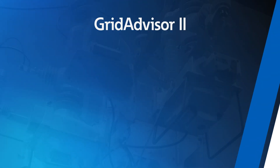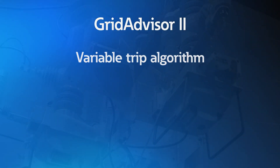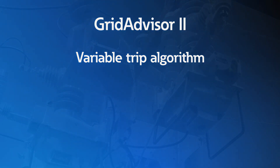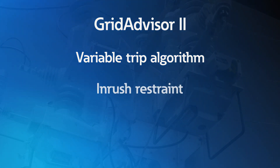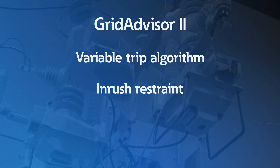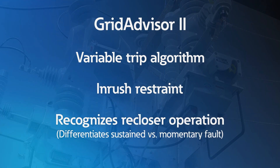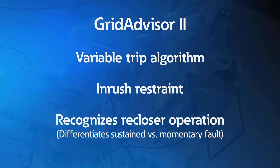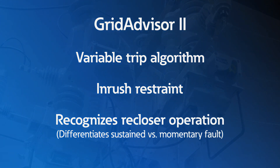The Grid Advisor 2 uses a variable trip algorithm, meaning it does not need close coordination with other protective equipment. It includes an in-rush restraint to avoid false tripping on in-rush currents. Additionally, it recognizes a recloser operation, allowing accurate differentiation between a sustained fault and a momentary fault.